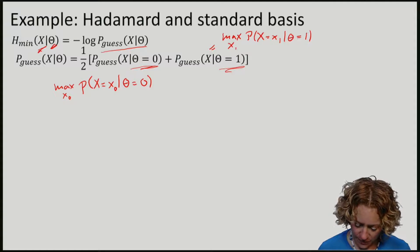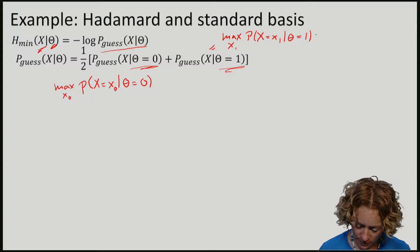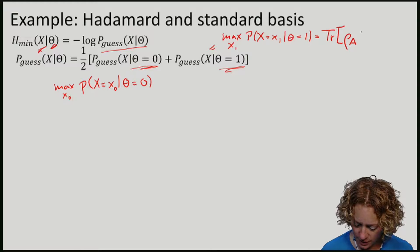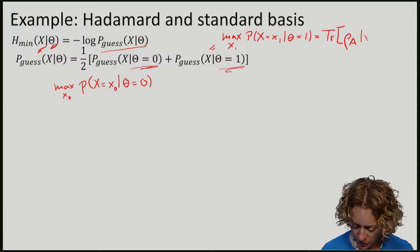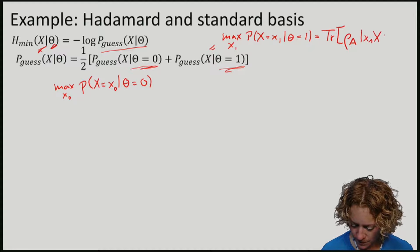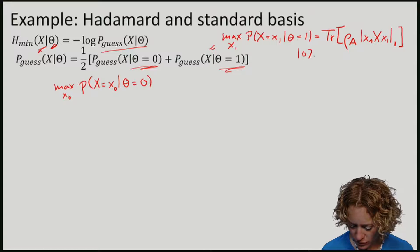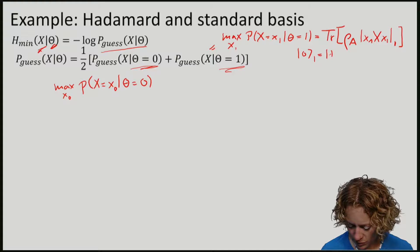So this probability, what is this? It is the probability that on the state rho A, in this case the Hadamard basis, Alice gets outcome with X1 in basis one. So here we have zero, one, being plus and zero, one, one being minus.